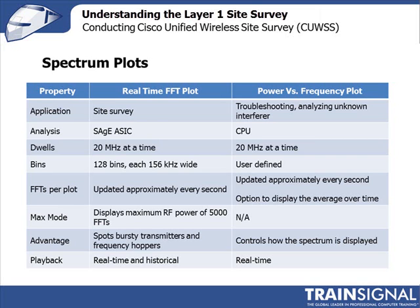The power versus frequency plot is the one to use when troubleshooting. If you've found a source of interference and want to focus on that particular interferer without scanning the whole band, narrowing the frequencies speeds up the refresh rate considerably. As you walk around with the Cisco Spectrum Expert trying to determine if you're getting closer to or further from the interferer, that higher refresh rate makes it much easier to work with.